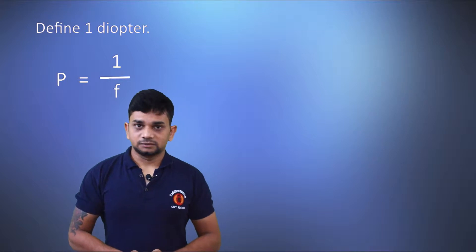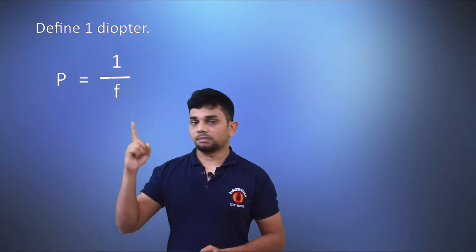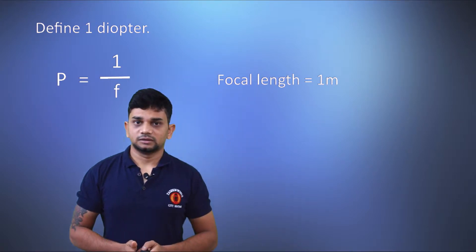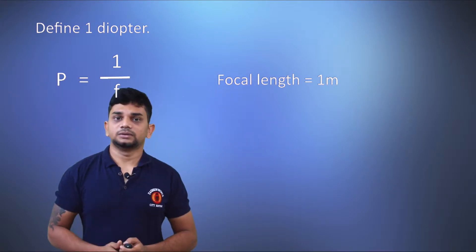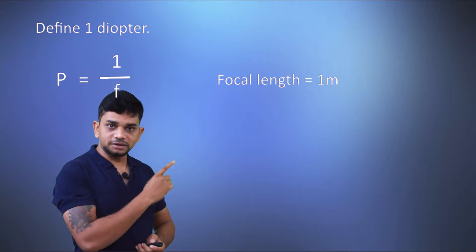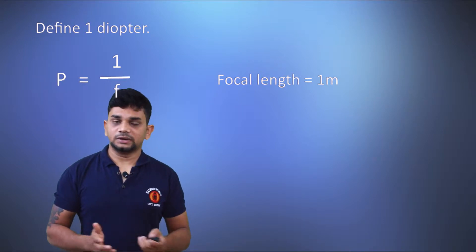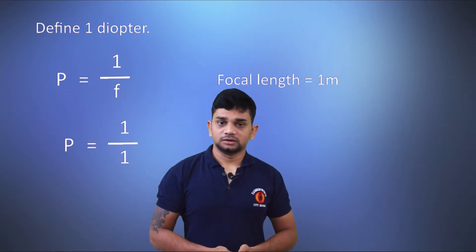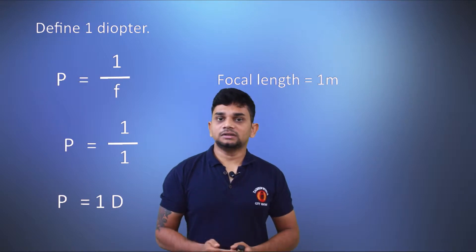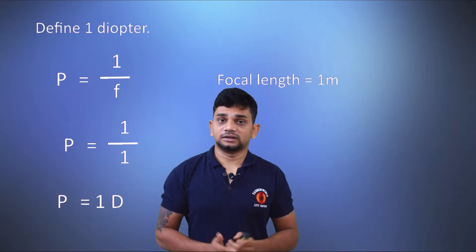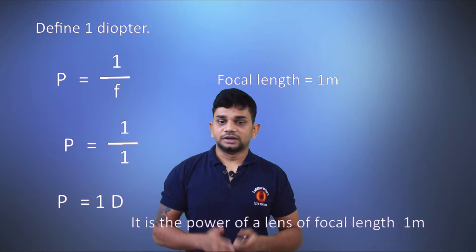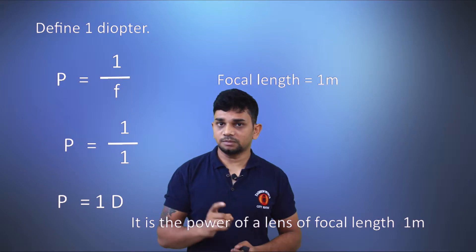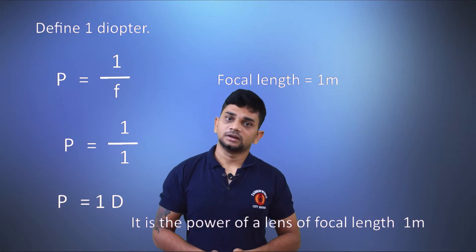The equation for power is P equals one by f. We are considering a lens of focal length one meter and substituting that value in the equation. Then it will be P equals one by one, which is one. So the power is one diopter when the focal length is one meter. We can define one diopter as the power of a lens whose focal length is one meter.